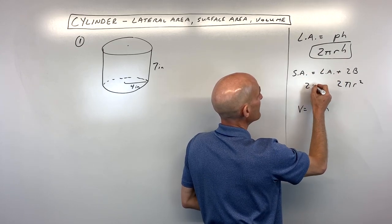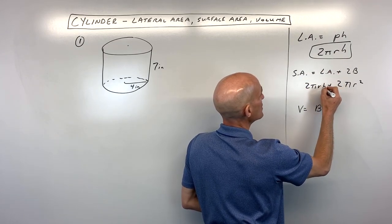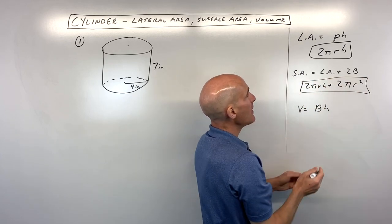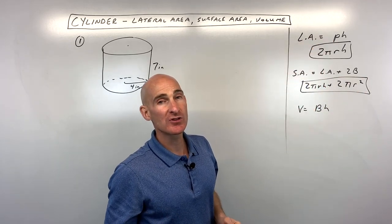And the lateral area, we already talked about that, that's 2πrh. So a lot of times, students like to memorize this formula, but I kind of like to use the general formula, so there's a little bit less for me to memorize.